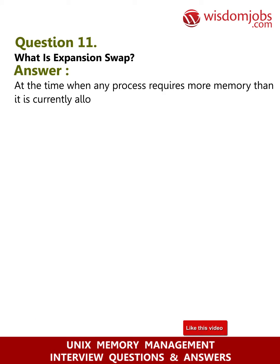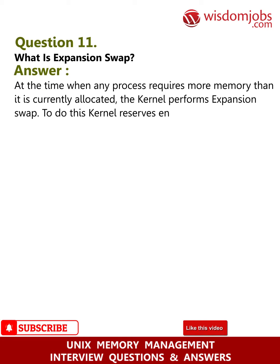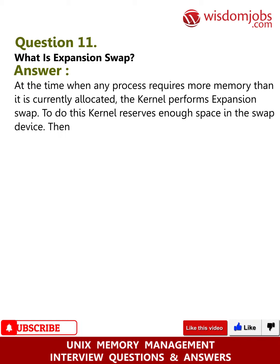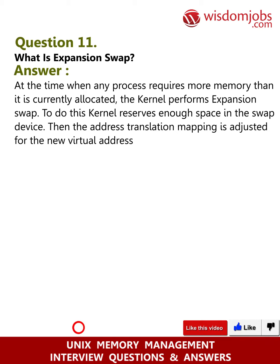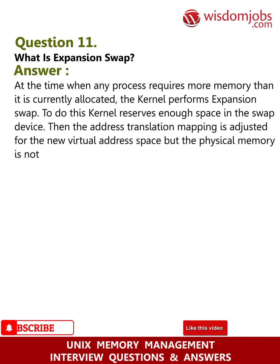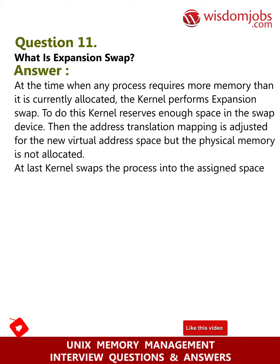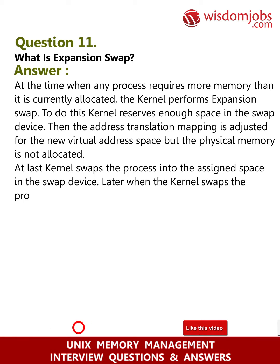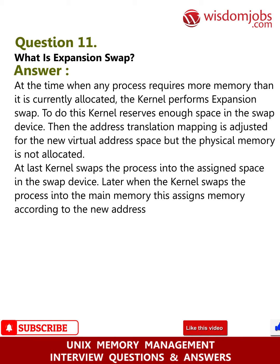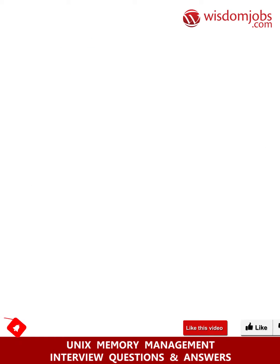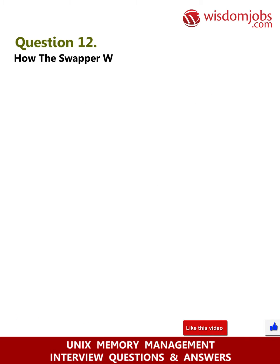Question 11: What is expansion swap? Answer: When any process requires more memory than it is currently allocated, the kernel performs an expansion swap. To do this, the kernel reserves enough space in the swap device, adjusts the address translation mapping for the new virtual address space, but does not allocate physical memory. The kernel then swaps the process into the assigned space in the swap device. Later, when the kernel swaps the process into main memory, it assigns memory according to the new address translation mapping.